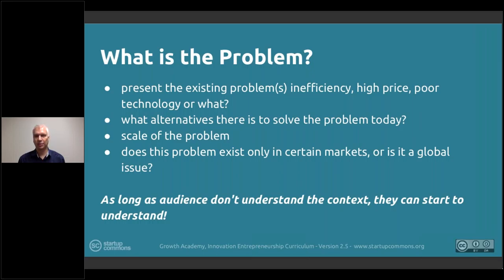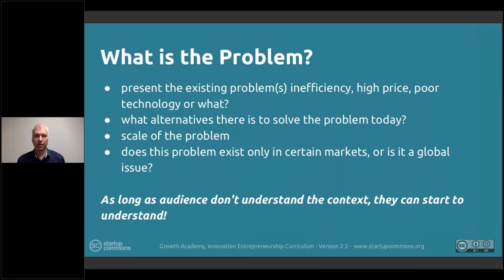The problem may be many things — inefficiency, high price, poor technology, or an unmet need. There are always ways the problem is being solved today, so consider what alternative solutions exist. Even if there's no direct competitor, how are people managing now — manually, with old tools, or with help from others? Also consider the scale of the problem: is it a big problem that many have, a small problem that many have, or a big problem that few have but with potential for a bigger opportunity?